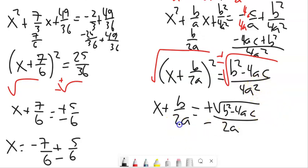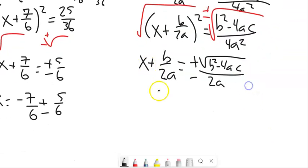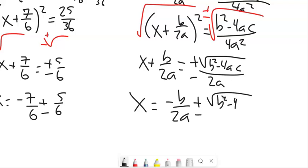And then I've got one last step. I'm getting so excited. I've got one last step, which is to subtract this B over 2A from both sides.